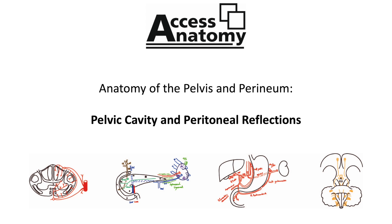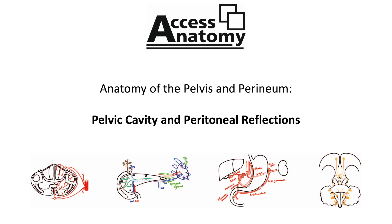If we follow the peritoneum from the anterior abdominal wall, then as it approaches the pubic symphysis, it is reflected onto the superior surface of the bladder. From the superior surface, it extends laterally to the lateral walls of the pelvis, creating the paravesical fossa on each side of the bladder. Continuing posteriorly from the superior surface, it then descends along the base or posterior part of the bladder, where it is then reflected onto the rectum.